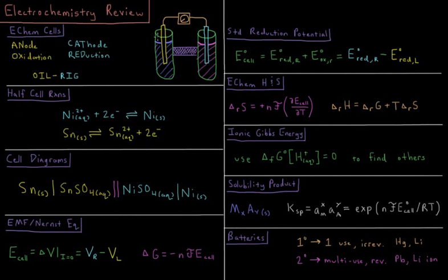This cell can be represented by a cell diagram where we have our anode on the left, cathode on the right, the electrodes on the outside, and the aqueous solutions on the inside. The salt bridge is represented by a double bar in the middle.